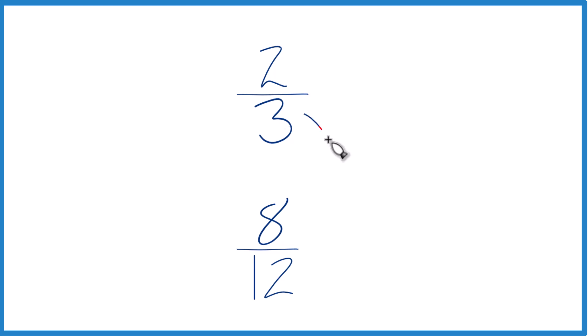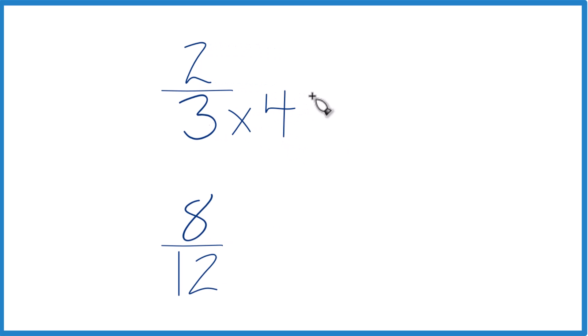I know that three times four equals twelve, so I have a denominator of twelve here. It's already twelve down here, so let's just keep that the same. And now up here, I can't just multiply the denominator by four. I also need to multiply the numerator by four. Four over four is just one, so we don't change the value, just the way it's represented.